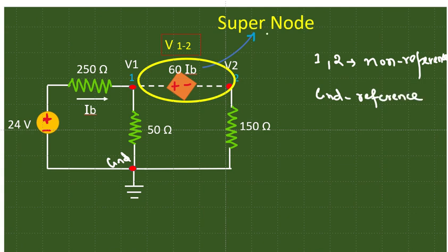This super node is the node in which the voltage source, dependent or independent, is connected between non-reference nodes. Then these nodes will be considered as a single node. That's why we termed it as one-two. This would be considered as a single node.